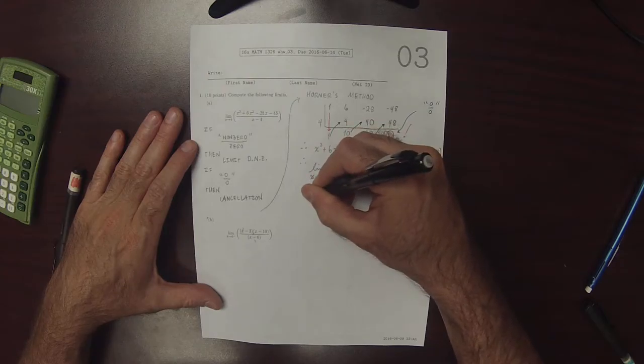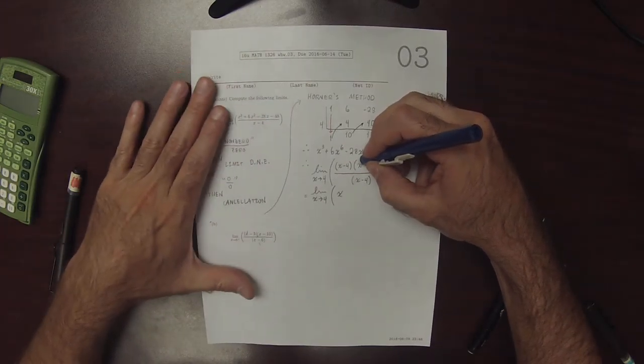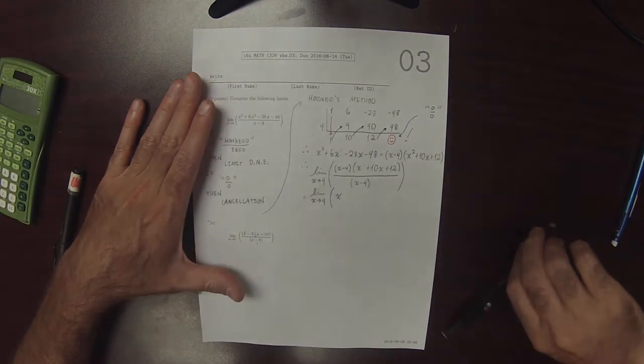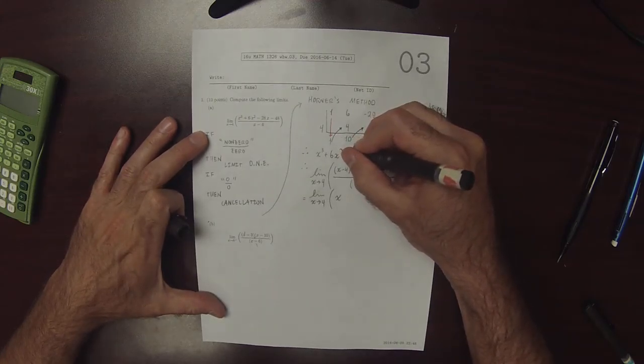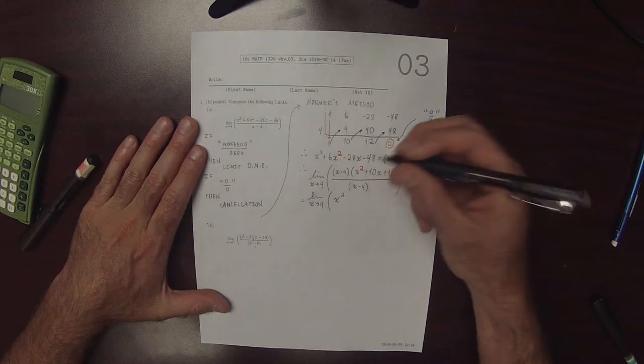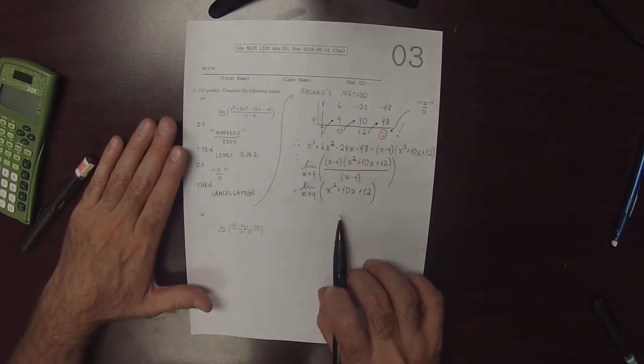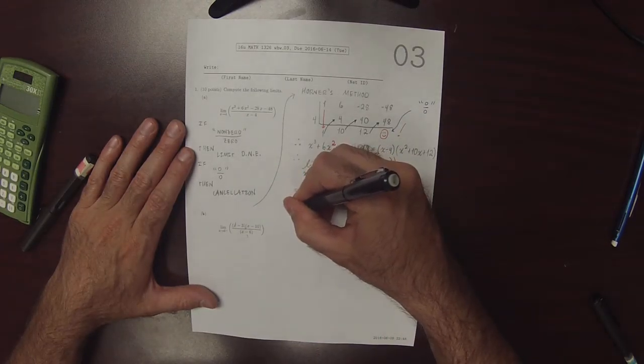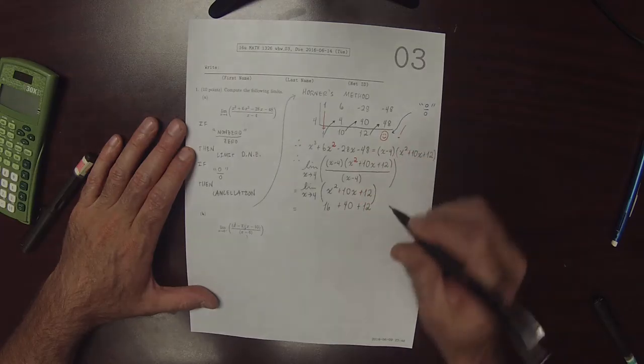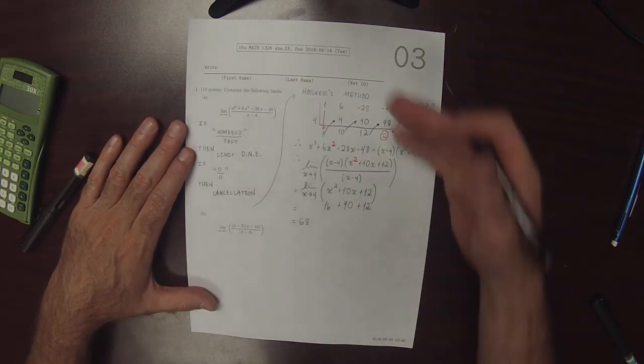So they can be canceled. So this is the limit as x goes to 4 of x squared plus 10x plus 12. And so now this limit is no longer indeterminate, and we can just evaluate it at the limit point now. So this would be 16 plus 40 plus 12, which is 28 plus 40. So that's 68 is the answer to the first part A.